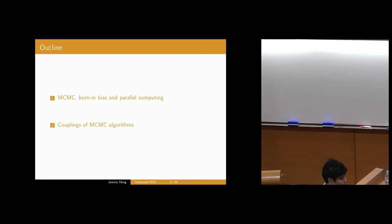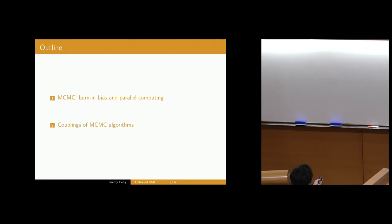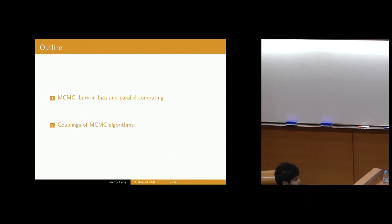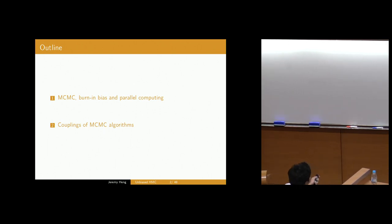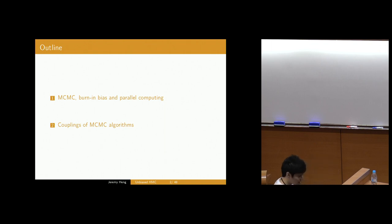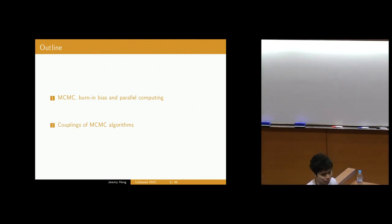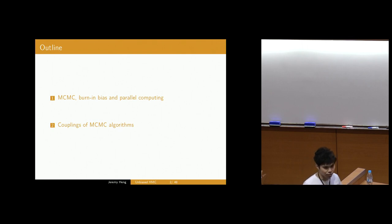Here's the plan of my talk. I'm going to start by setting up the problem, discussing MCMC, its burn-in bias, and why that hinders parallel computation. With that as motivation, I will then introduce our proposed methodology, which would remove the burn-in bias and hence enable parallel computation. This proposed methodology very much depends on your ability to come up with couplings of MCMC algorithms, so that's going to be the second half of the talk.